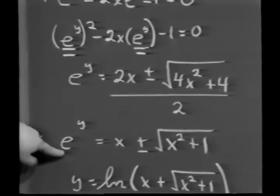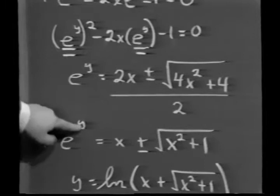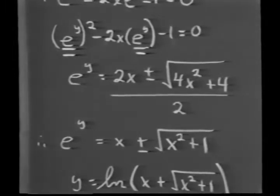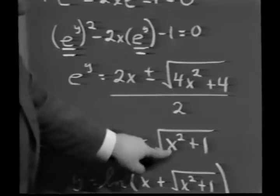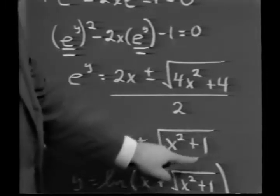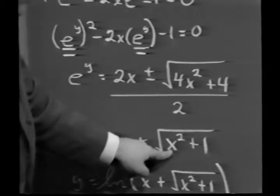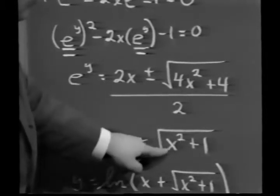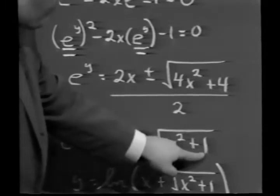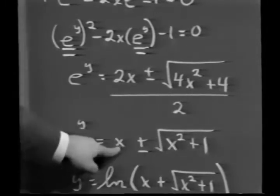The point to keep in mind now is remember that in terms of exponentials, e to the y can never be negative. Observe that the square root of x squared plus 1 is bigger than x in magnitude. See, x would be just the positive square root of x squared. So the positive square root of x squared plus 1 is bigger than x in magnitude.